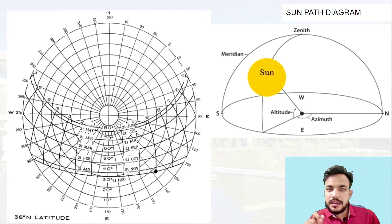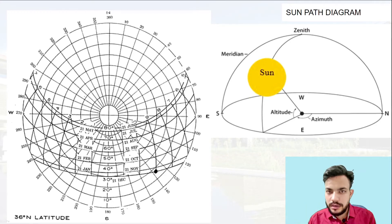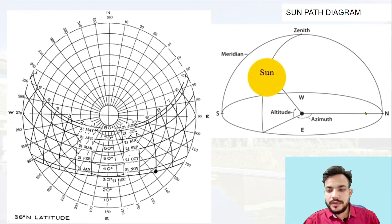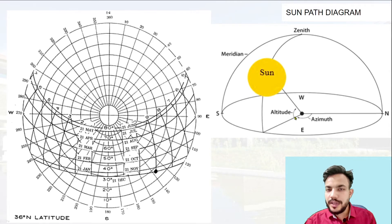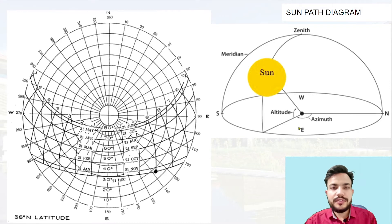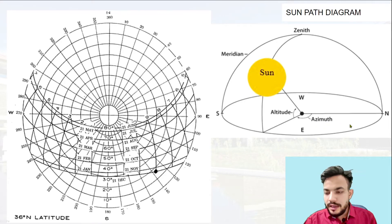Before starting with how to read a sun path diagram, I'll begin with the basic concepts of the movement of the sun with respect to the earth. This hemisphere is representing our earth, and you can see there is a horizontal circle representing the ground on which we are living, and vertical circles representing the position of the sun. There are two very important parameters: one is the altitude and one is the azimuth. Azimuth is nothing but the position of the sun with respect to the north direction.